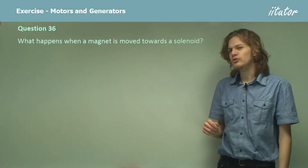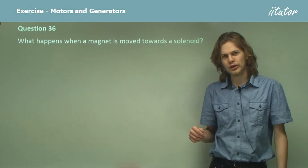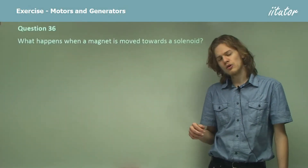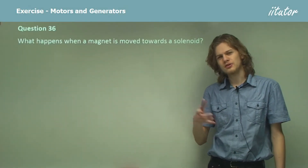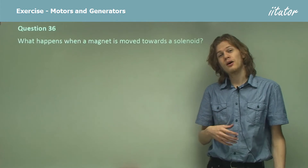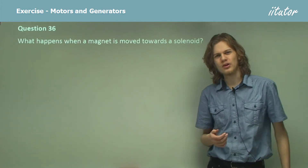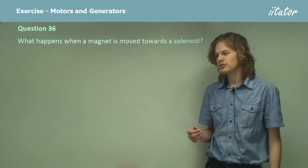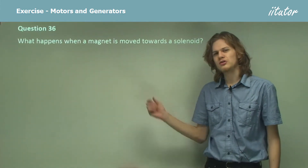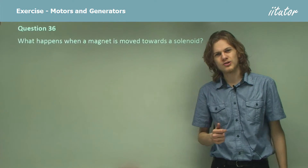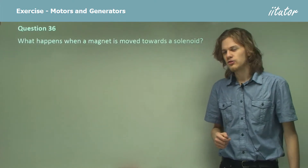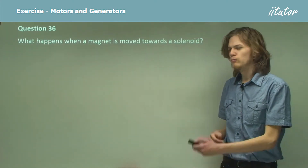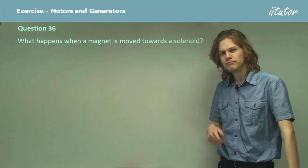What happens when a magnet is moved toward a solenoid? We had a question fairly similar to this in part 4 of the exam paper, but this is asking us to describe it in a general sense. So what answer can we give?